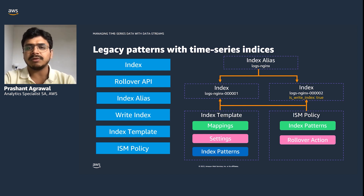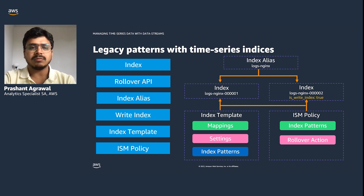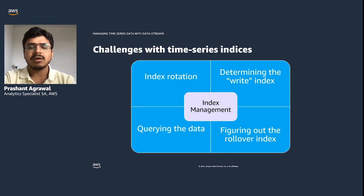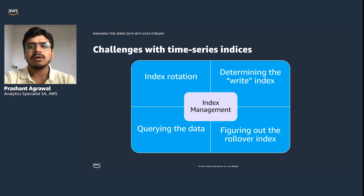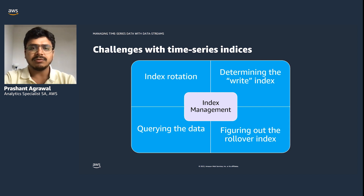The index state management policy defines the index pattern and rollover policy to roll over indices, either on the basis of time or size. With this legacy method, users have to be aware of many concepts to manage and maintain those indices and set them up explicitly. OpenSearch has basic support for time series data where indices can be named with a time-based prefix and suffix, organized by day, week, month, and so on.